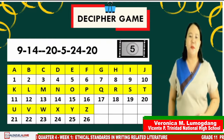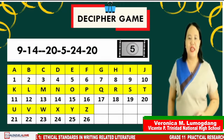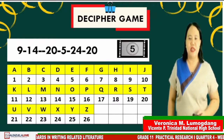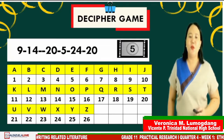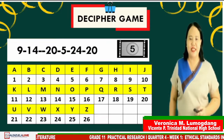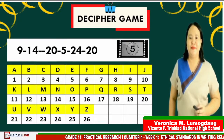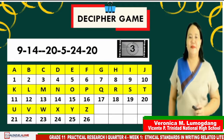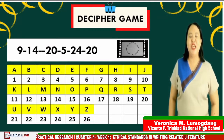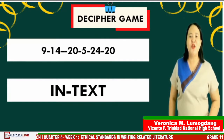First set of numbers are 9, 14, 20, 5, 24, and 20. Clue: the word is the citation that can be found along with the text. Go! If your answer is 'in text,' you got it right! Good job, grade 11 students!